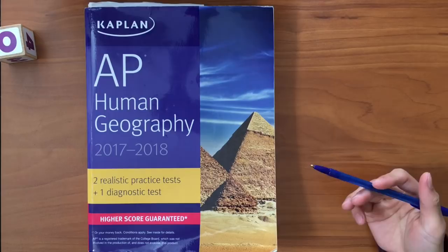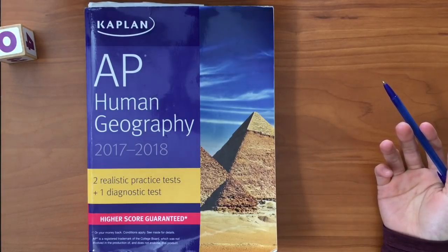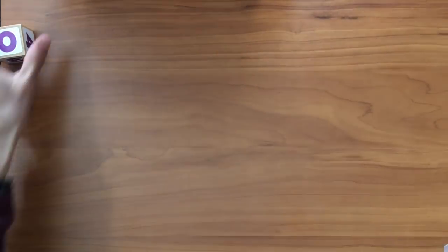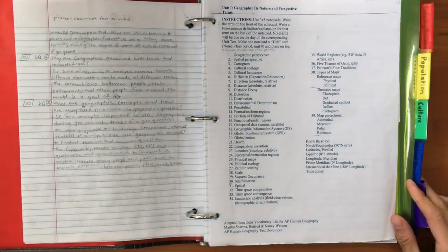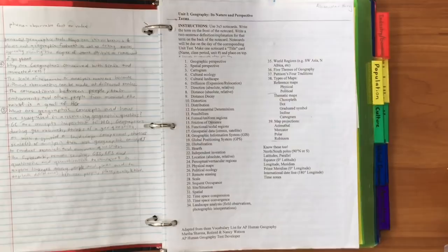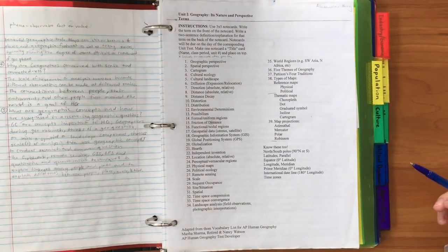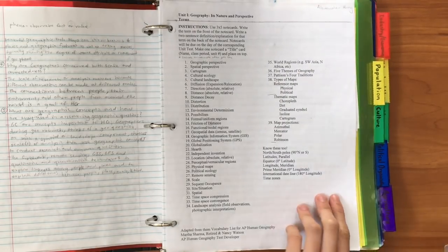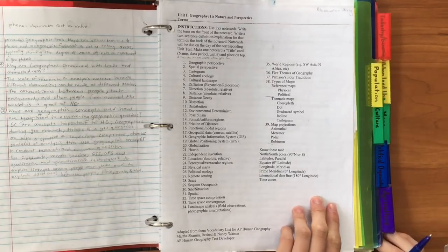The second tip is definitely vocabulary. This is all my vocab from last year, and you can see there's a lot. Human Geography is a really vocabulary intensive course, and if you know your vocabulary, you'll be good for the exam. Make sure you review all the vocab that your teacher has assigned you over the course of the year.